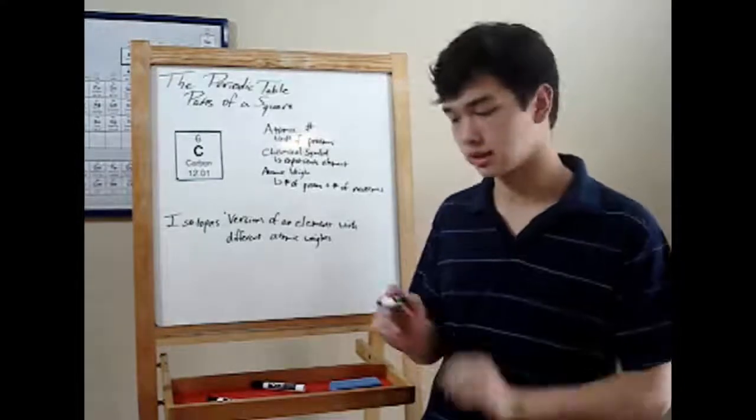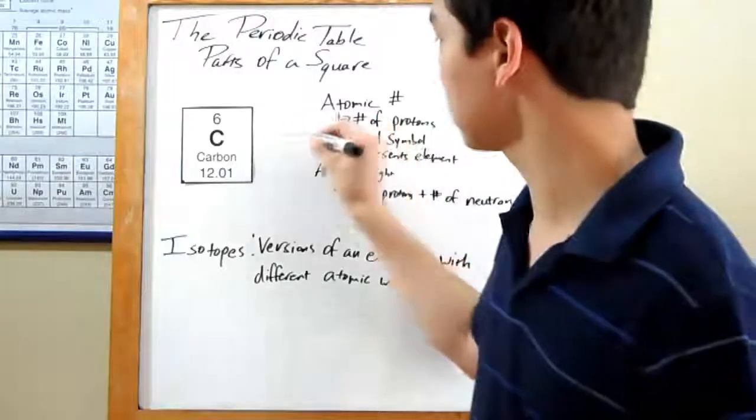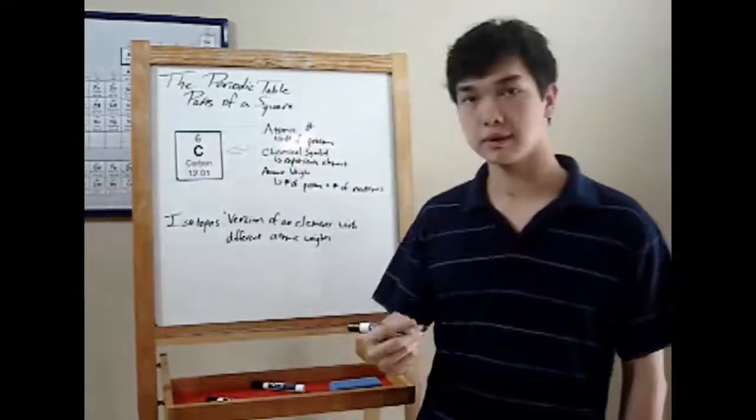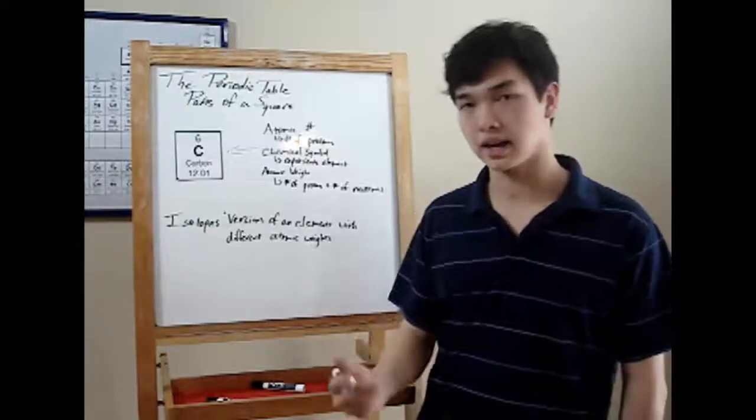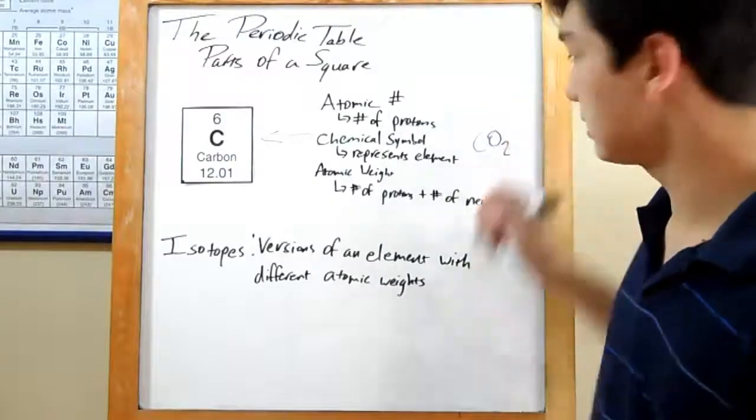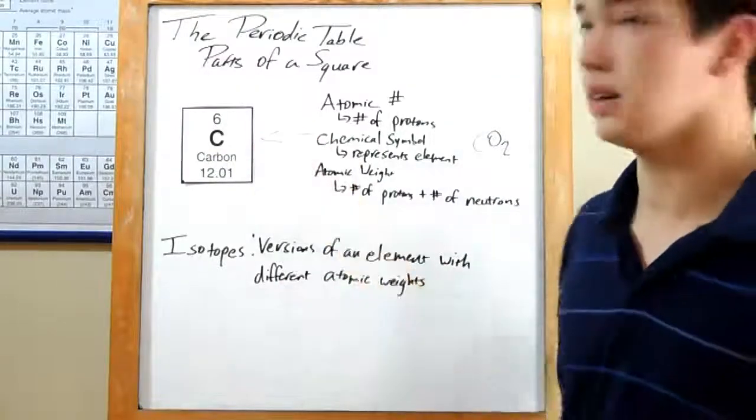There are three main parts to a square on the periodic table. The chemical symbol, first up. That's the letter or letters in the middle. It'll represent your element when you write out a compound or a chemical equation. For instance, CO2. This C represents the element carbon in carbon dioxide.